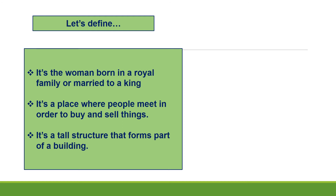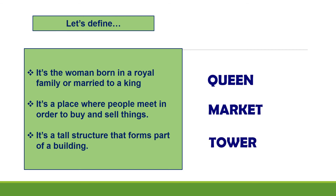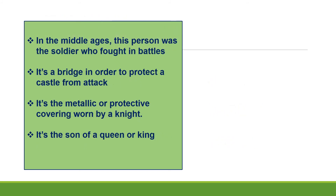Now, let's define. Listen to the definition and tell me what I'm talking about. It's the woman born in a royal family or married to a king — that's the queen. It's a place where people meet in order to buy and sell things. It's a tall structure that forms part of a building — tower. In the Middle Ages, this person was the soldier who fought in battles — knight. It's a bridge in order to protect a castle from attack — a drawbridge.